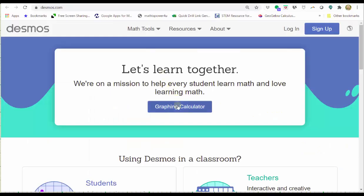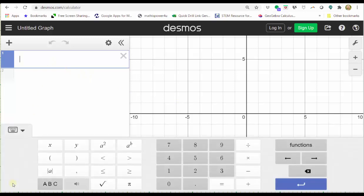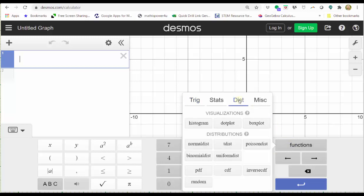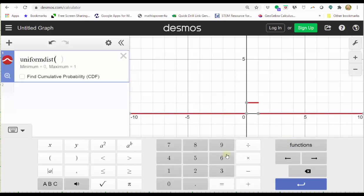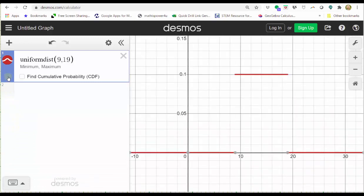Once we go to Desmos, click graphing calculator. In cell one, click show keypad, click functions, click distributions, click the uniform distribution option. Next, we enter the min comma the max. The min is nine comma the max is 19. Close the Desmos keypad. Click the zoom fit button, which is the magnifying glass. We have a graph of the distribution here on the right.